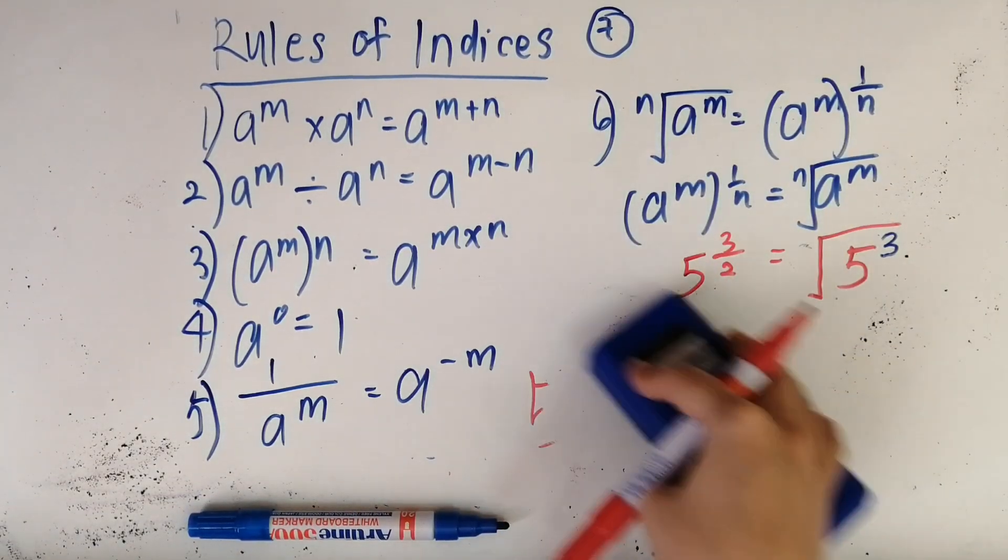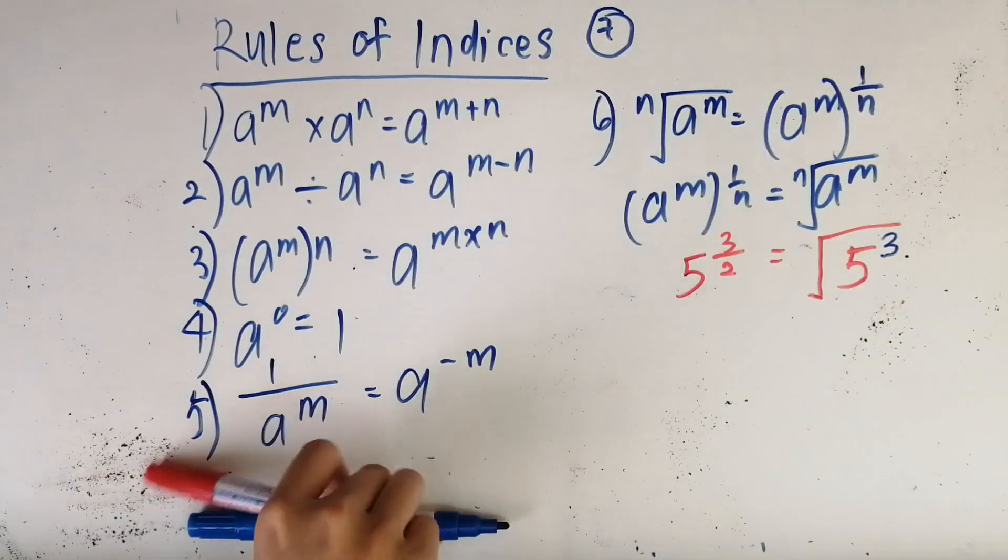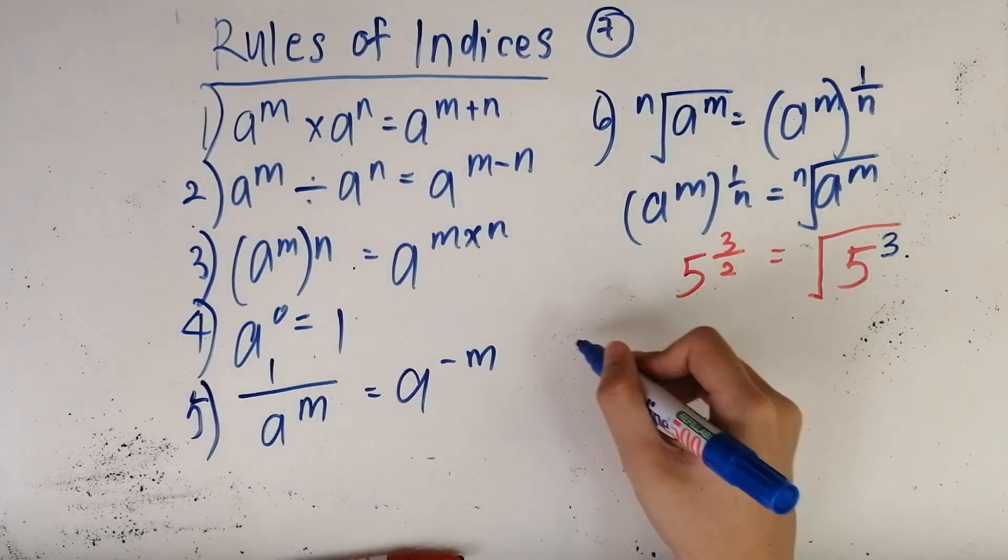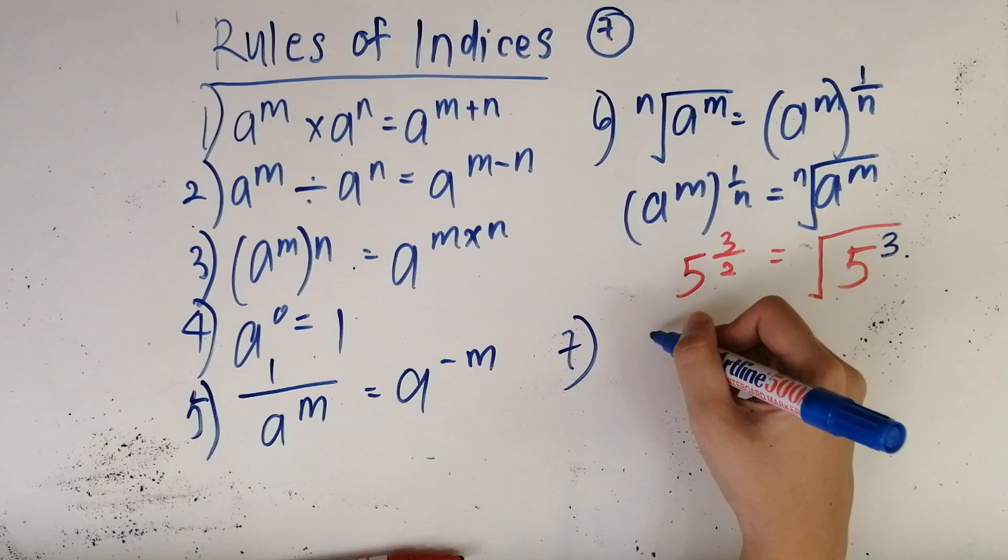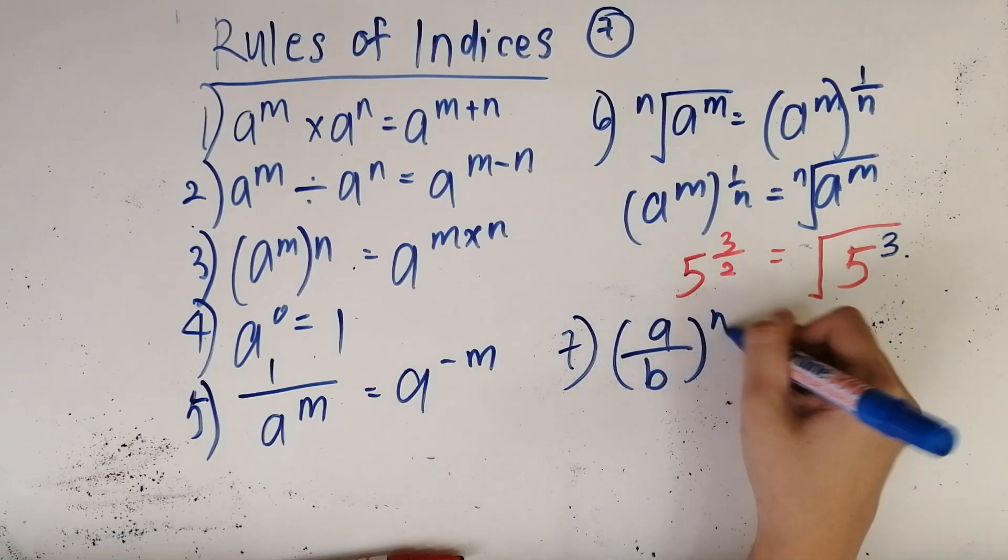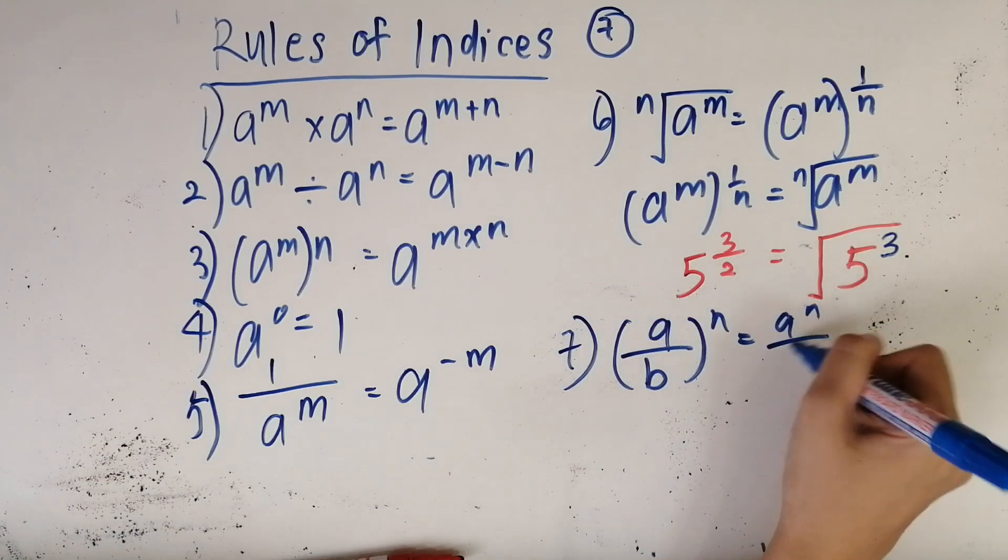Anyways, now we move on to the final and the seventh rule of indices, which is (a/b)^n equals a^n over b^n.